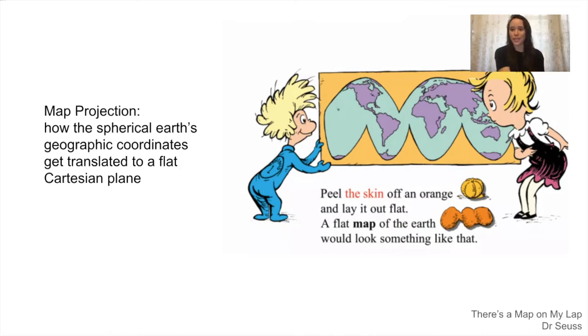So this is where map projections come in. It's how we decide how Earth's geographic coordinates get converted to a flat Cartesian plane.